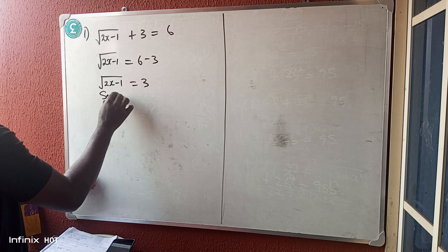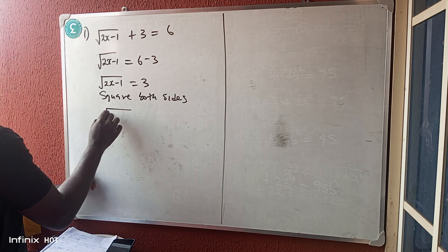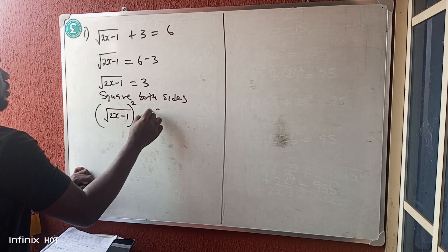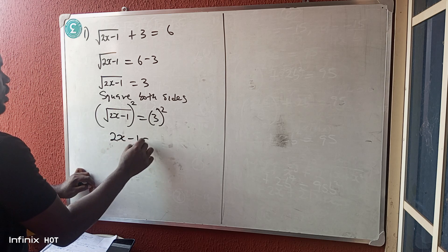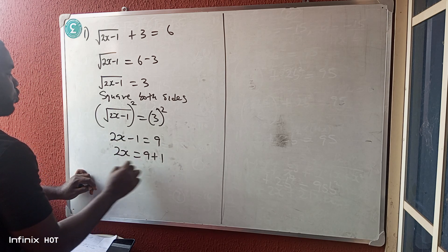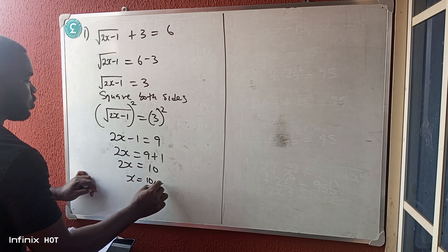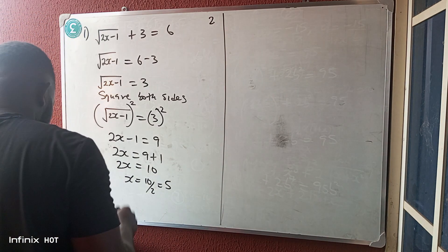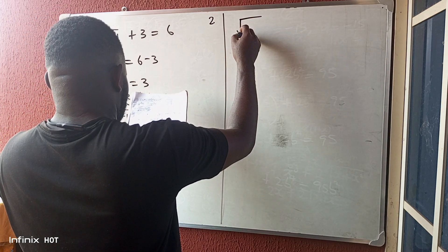Squaring both sides: root(2x - 1) squared equals 3 squared. The square root cancels the square, so we have 2x - 1 = 9. Then 2x = 9 + 1 = 10, so x = 10 ÷ 2 = 5.